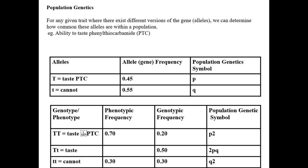Hello bio students! This lesson is on population genetics, where we're going to look at how the genetics of a population changes from generation to generation. We know that for any given gene there are different alleles, and we'll examine how the proportion of those alleles, as well as genotypes and phenotypes, changes from generation to generation.